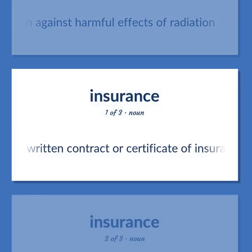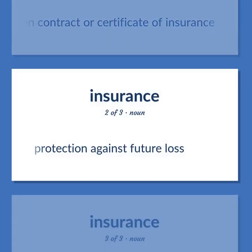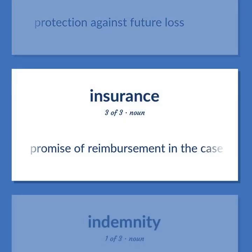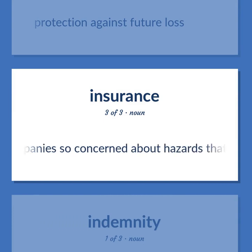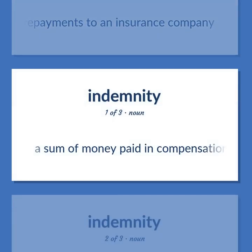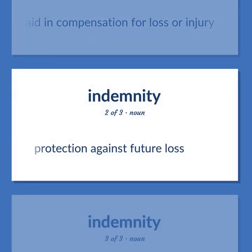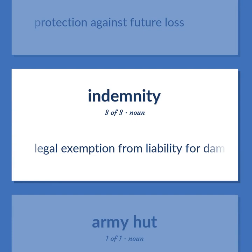Written contract or certificate of insurance. Protection against future loss. Promise of reimbursement in the case of loss, paid to people or companies so concerned about hazards that they have made prepayments to an insurance company. A sum of money paid in compensation for loss or injury. Protection against future loss. Legal exemption from liability for damages.